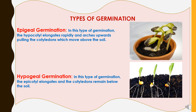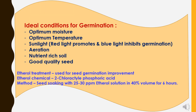There are two types of germination. First is epigeal germination, where the hypocotyl elongates rapidly and arches upward, pulling the cotyledons above the soil. Second is hypogeal germination, where the epicotyl elongates and the cotyledons remain below the soil. Ideal conditions for germination include optimum moisture, optimum temperature, sunlight — red light promotes germination while blue light inhibits it — proper aeration, and nutrient-rich soils. Some chemicals improve germination, such as ethrel treatment using 2-chloroethyl phosphoric acid; seed soaking with 25–30 ppm ethrel solution at 40% volume for 6 hours has given results of improving germination.